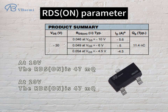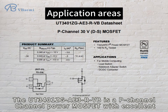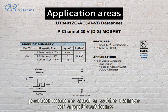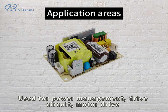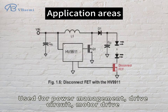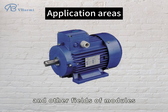The UT3401 ZGAE32VB is a P-Channel power MOSFET with excellent performance and a wide range of applications, used for power management, drive circuits, motor drive, and other fields.